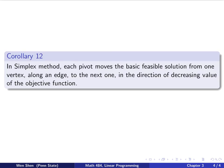This is the final corollary, corollary number 12. And now we go back to the simplex method, and we see what we were doing in the simplex algorithm. So the corollary says in the algorithm, each pivot moves the basic feasible solution from one vertex along an edge to the next one in the direction of decreasing value of the objective function, for the non-degenerate case. So now you know what we were doing in the algorithm.